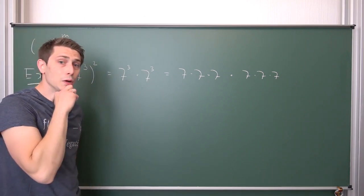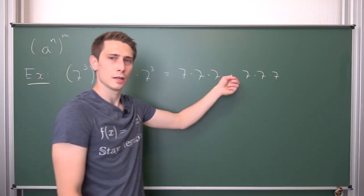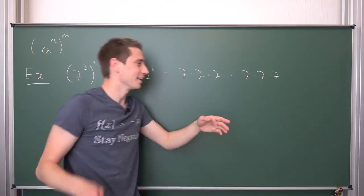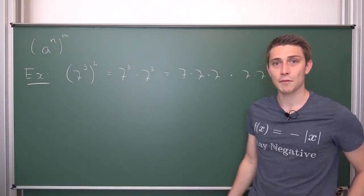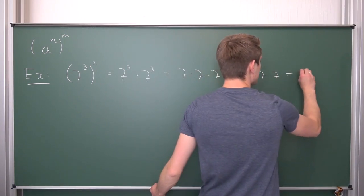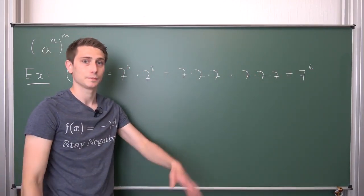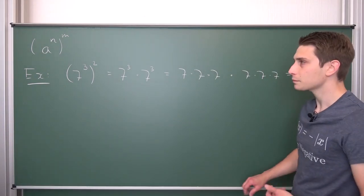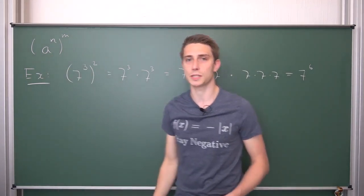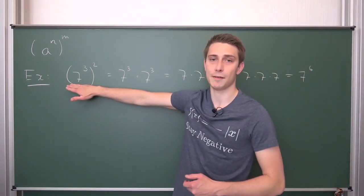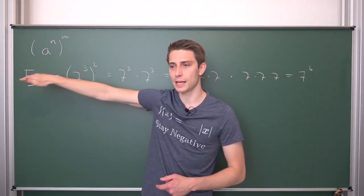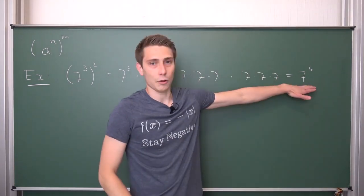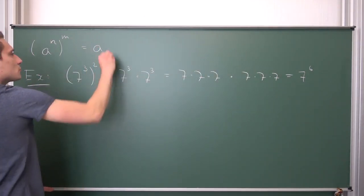Now we count how many 7s we have: 1, 2, 3, 4, 5, 6. So we have 7 multiplied with itself 6 times, meaning by the verbal definition this is nothing but 7 to the 6th power. We can immediately see something: we had 7 cubed as the base, meaning a to the nth power was the base, but the sub-base was 7, or a. Just like with the last exponentiation rule, we preserved our main base a — it comes out on the other side again.